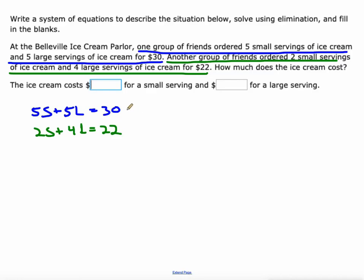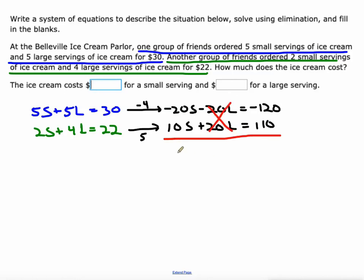Now we have to solve this equation. I'm going to get the L's to cancel out, so I'll multiply the top equation by -4 and the bottom equation by 5. I'll get -20S - 20L = -120 and 10S + 20L = 110. The reason I did that is because when I add them together, the L terms cancel out. -20S + 10S is -10S, and -120 + 110 is -10. When I divide both sides by -10, I get positive 1.